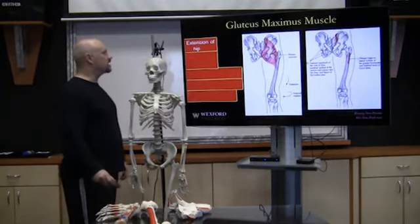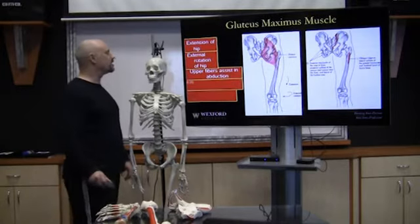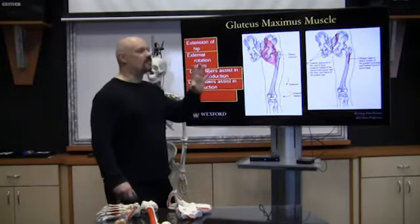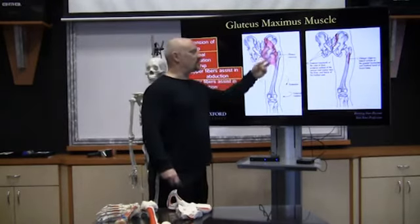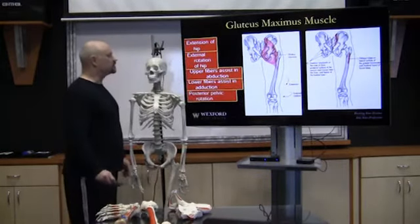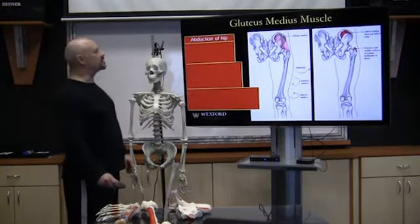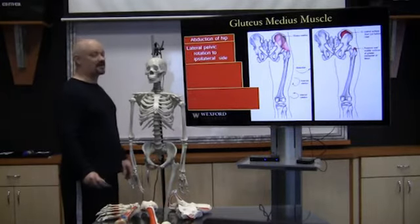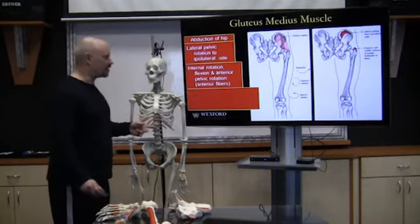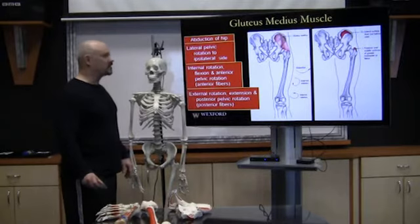The gluteus maximus does extension of the hip, external rotation of the hip, upper fibers assist abduction, lower fibers assist adduction, and posterior pelvic rotation. You have to look at how the muscle fibers are arranged, because different parts may do different movements. The gluteus medius does abduction of the hip, lateral pelvic rotation to the ipsilateral side; anterior fibers do internal rotation, flexion, and anterior pelvic rotation; posterior fibers do external rotation, extension, and posterior pelvic rotation.